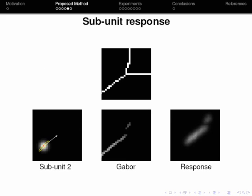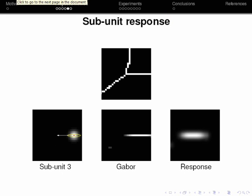We repeat the same procedure for subunit 2 which is responsible for diagonal line segments and also for subunit 3 which is selective for horizontal line segments at this relative position with respect to the center of the filter.